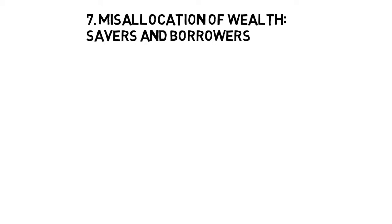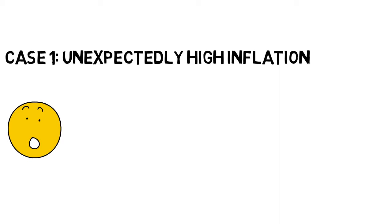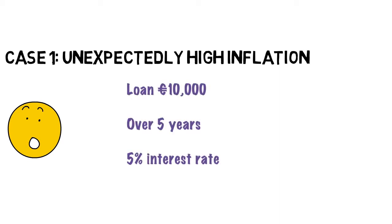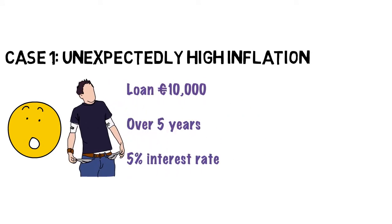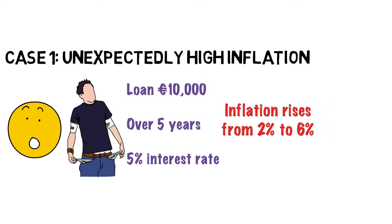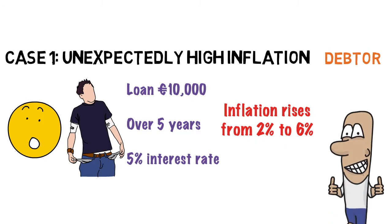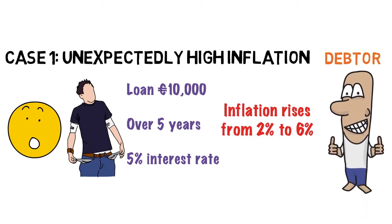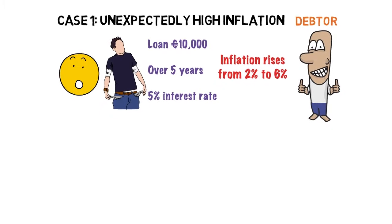Number seven: inflation, if unexpected, can cause a redistribution of wealth. For example, if a student took out a loan of 10,000 euro at five percent interest to be repaid over five years, and inflation rises unexpectedly from around two percent up to five or six percent, the debtor is actually better off. They will be paying back money in five years' time that is worth less than when the loan was taken out — five or six percent less — so the debtor wins out.